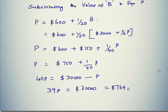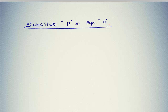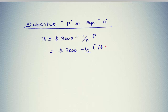So P = $769 is the value of the pump room expenses. Once we have P, we substitute this value back into equation 1 to find B. We know B = $3,000 + (1/2) × P = $3,000 + (1/2) × 769 = $3,000 + $385 = $3,385.